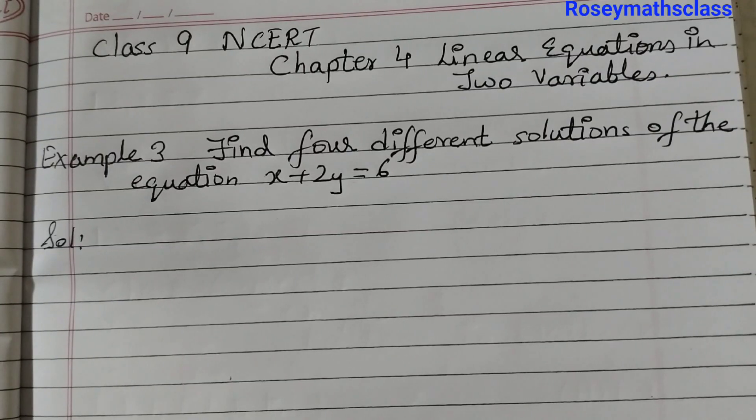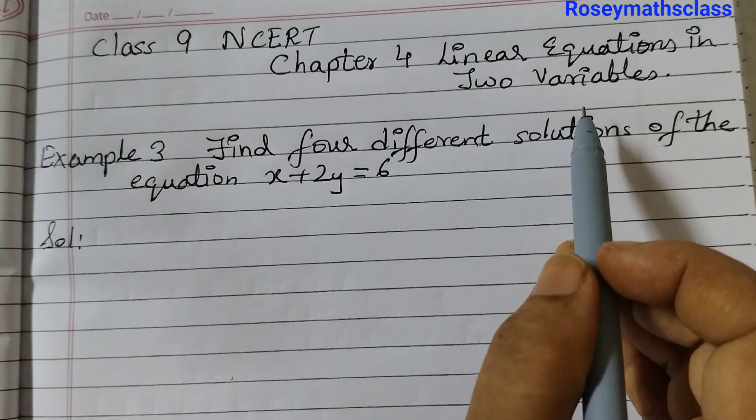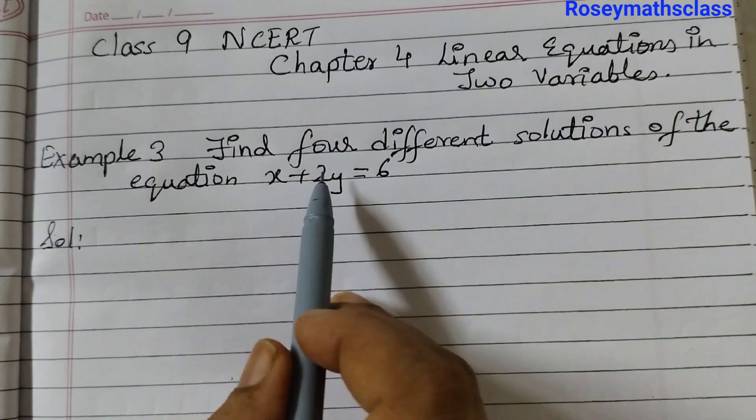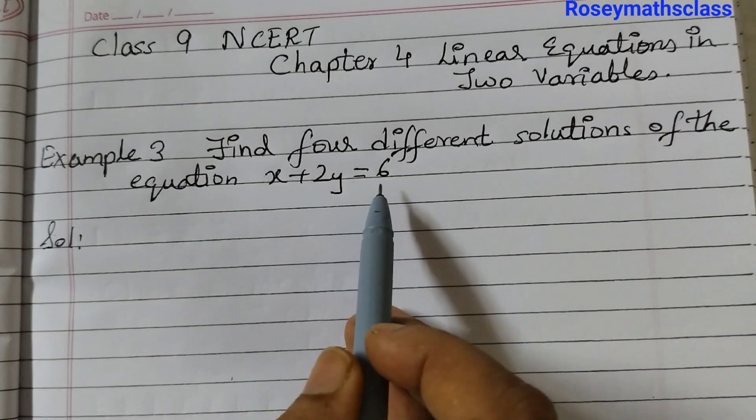Hello students, in this video we shall discuss example number 3 of chapter 4 linear equations in two variables. Find four different solutions of the equation x plus 2y equals 6.